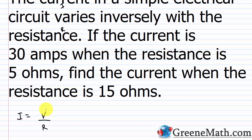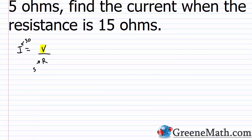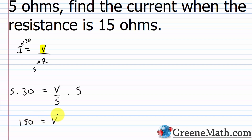In the starting scenario, the current is 30 amps, so plug in 30 for I, and the resistance is 5 ohms, so plug in 5 for r. We have 30 equals v over 5. Multiply both sides by 5 and we get 150 equals v. So the voltage is 150 — that stays the same.